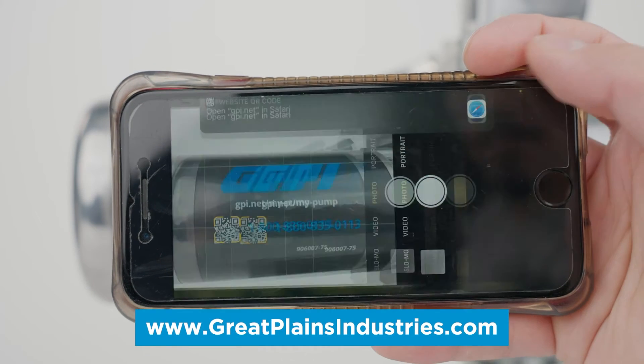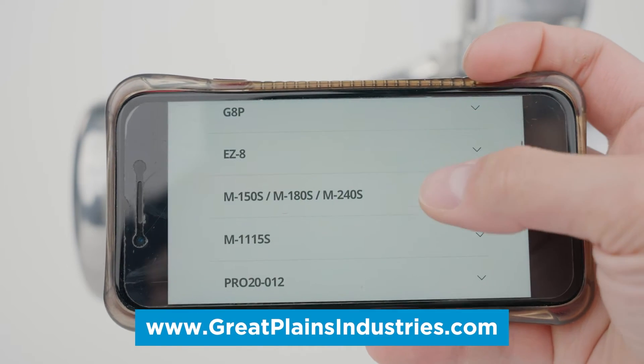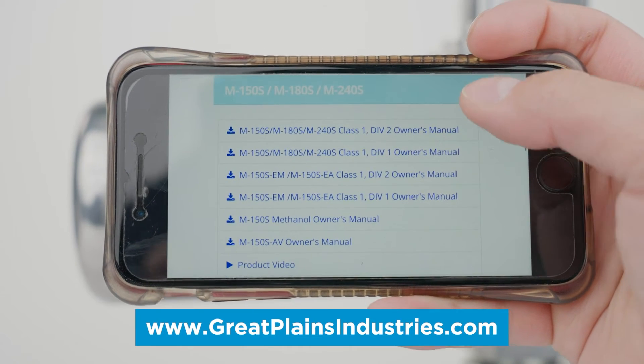If replacement parts are needed, they can be ordered through our website by scanning the QR code on the side of your pump with your smartphone.